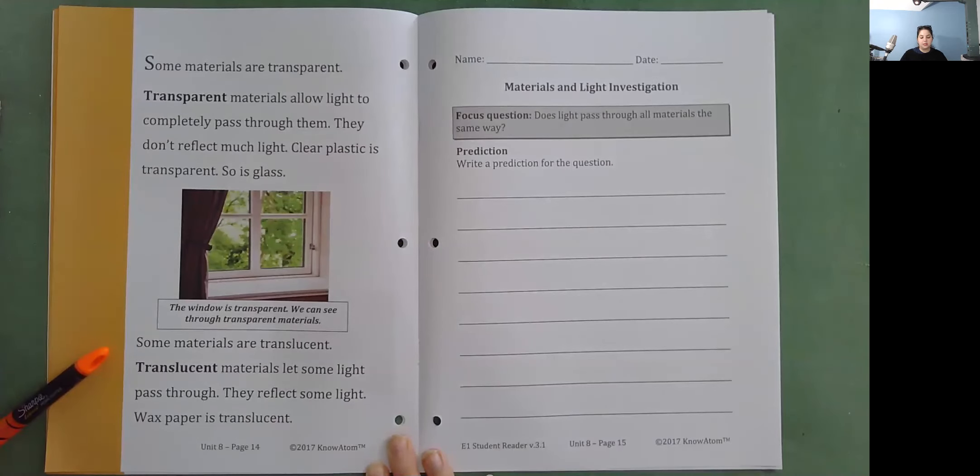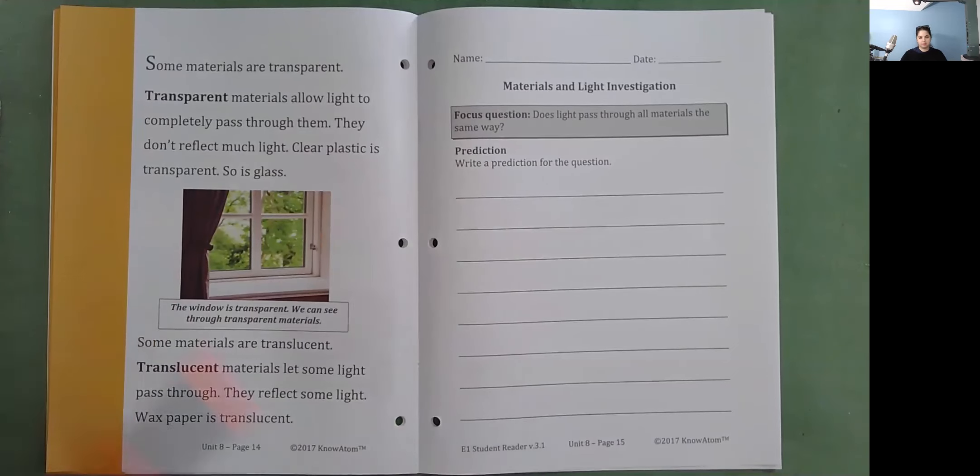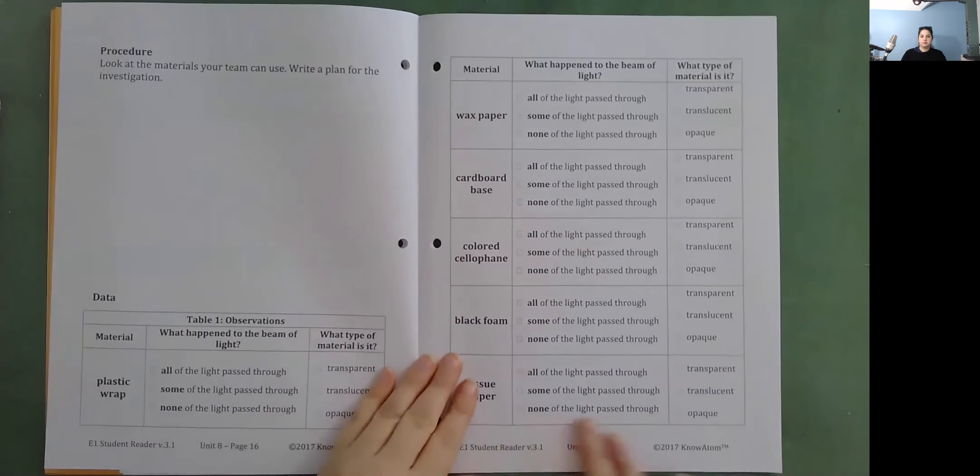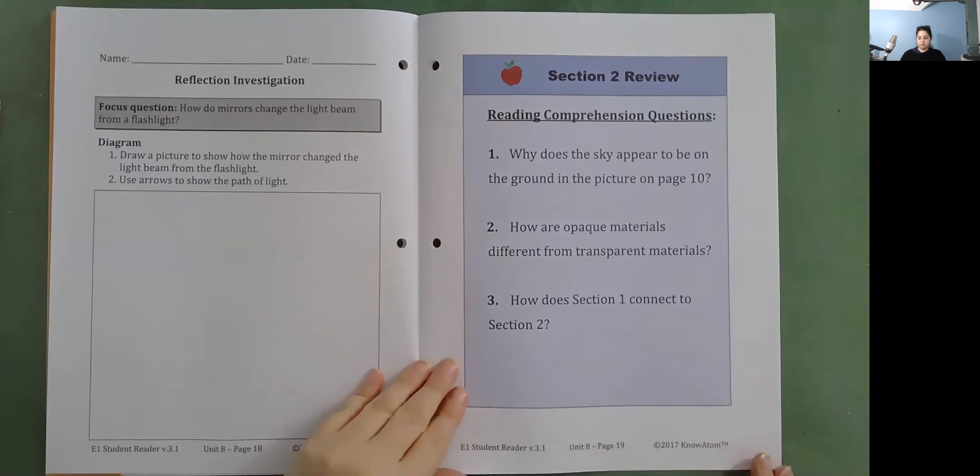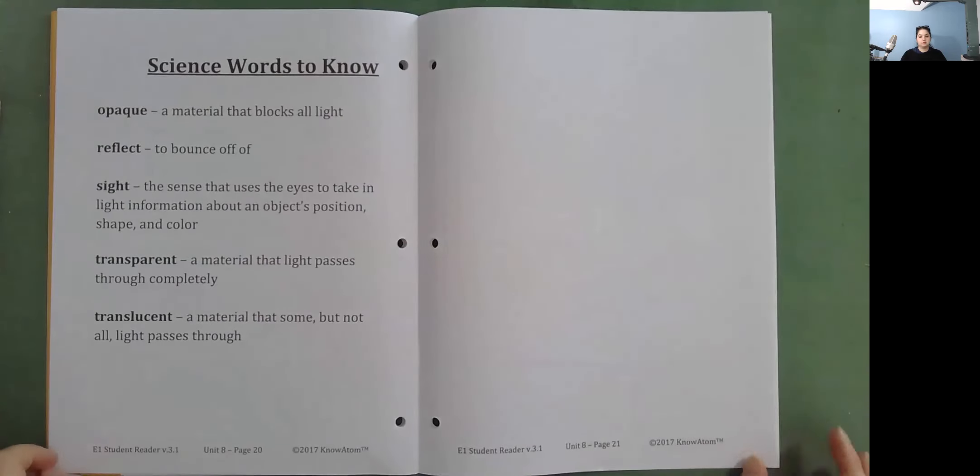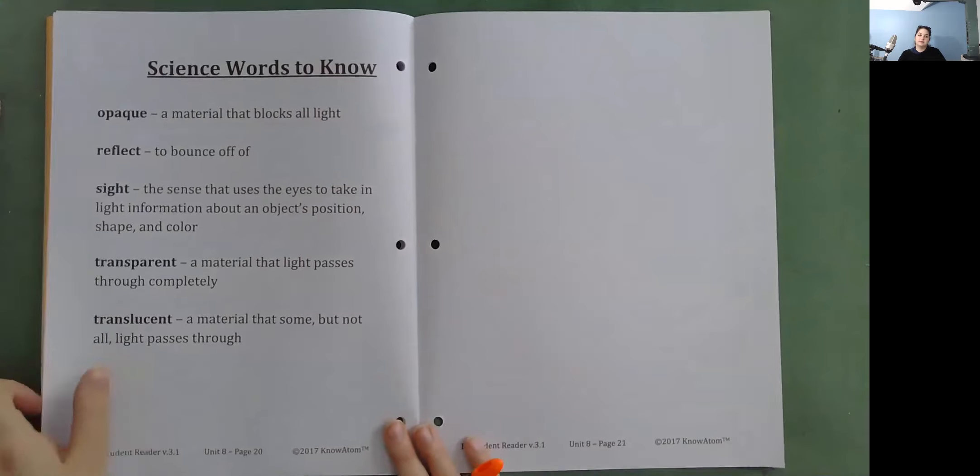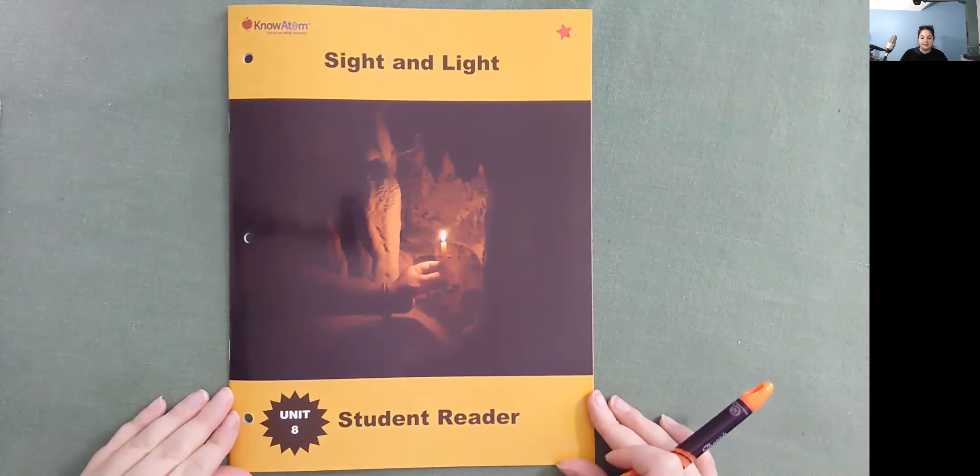Some materials are translucent. Translucent materials let some light pass through. They reflect some light. Wax paper is translucent. The window is transparent. We can see through transparent materials.